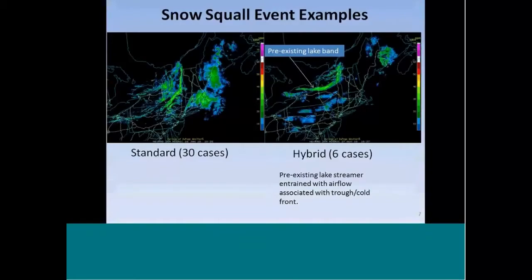This is a representative look at what the snow squall events look like. You're more or less dealing with a low-topped convective line. In that context, it's useful to think of these squalls as essentially mesoscale convective systems. A standard case is shown on the left where you have a narrow convective line. A hybrid case is one where we have a pre-existing lake streamer — in this case extending off of Lake Ontario — being entrained into a mobile upper-level trough moving across northern New York. The end result for our forecast area is generally the same: a brief burst of moderate to heavy snow, whether it's a standard case or a hybrid.